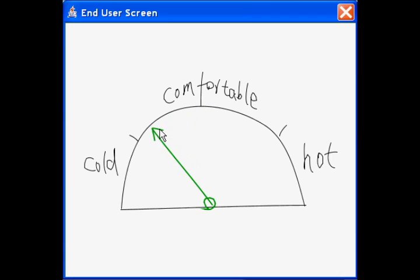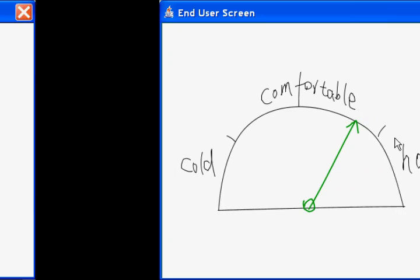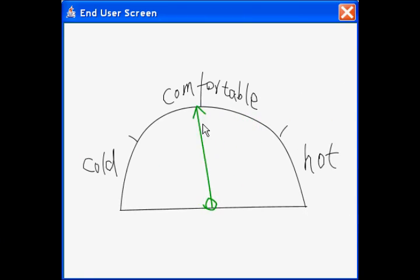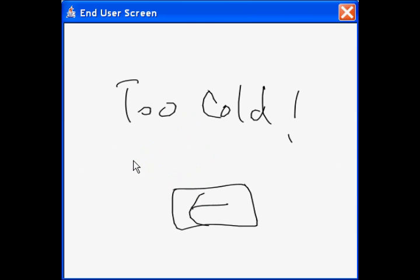A user can interact with the needle continuously. When the needle is set in the hot zone, the prototype automatically shows the too hot feedback page. When the needle is dropped at a cold zone, the cold page will be displayed.